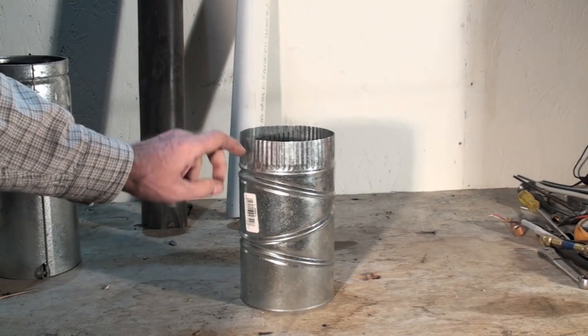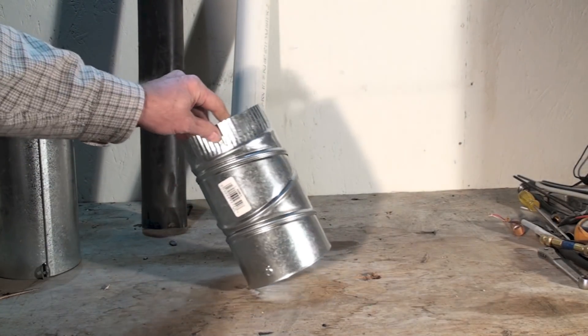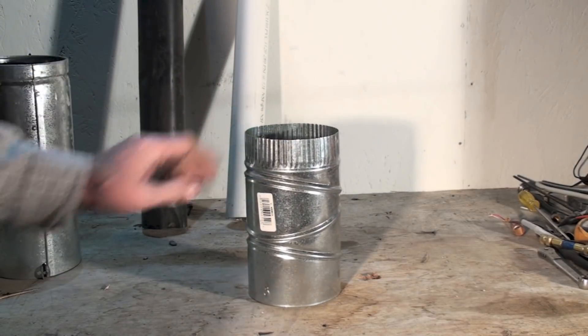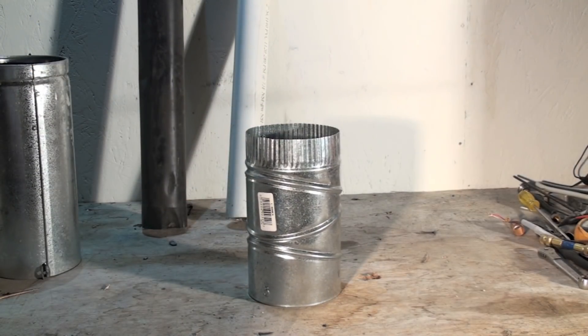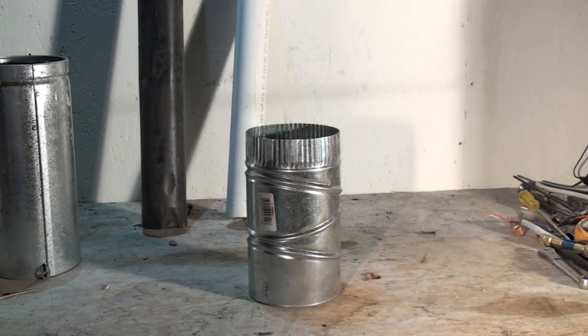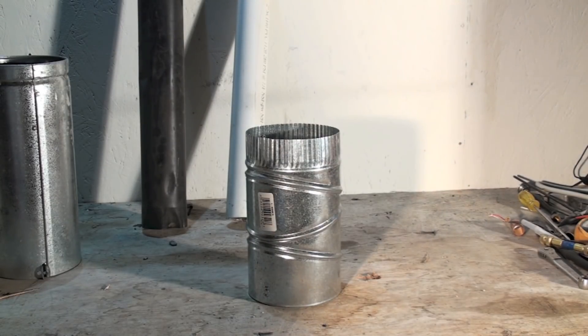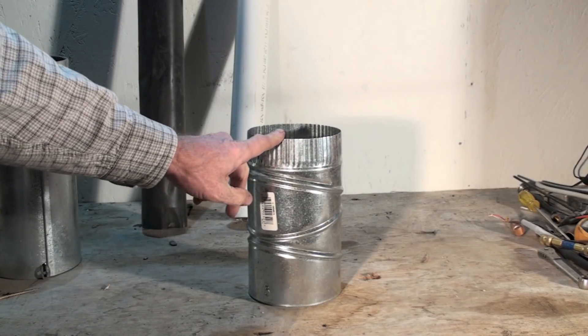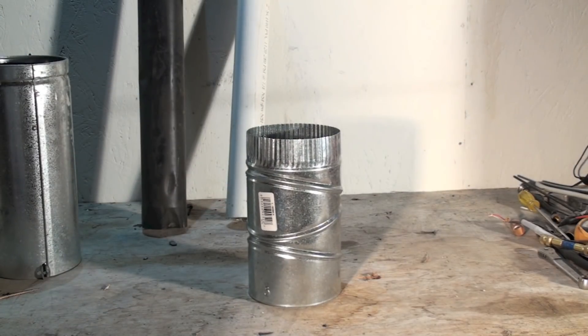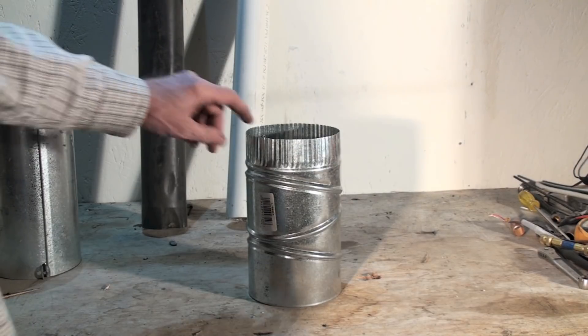Six inches clearance to combustibles was used as a vent connector, meaning it connected the furnace to whatever venting you used. Now back in the old times you could go into a masonry chimney, and the masonry chimney was your vent. Anymore we don't do that.